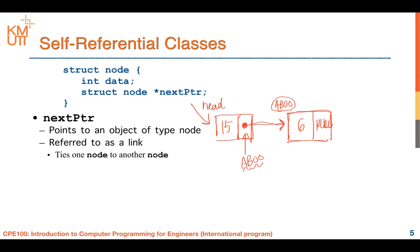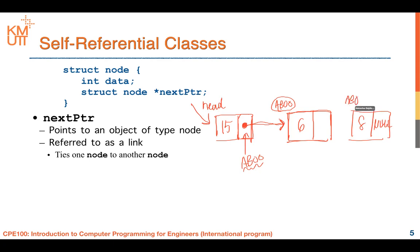If you want to link six to eight, you declare the link of six as null initially, then change it to the address of the new node eight - suppose AB08. This means element six will link to it. So in this way you can represent a linked list - very easy.